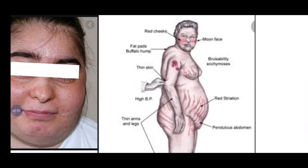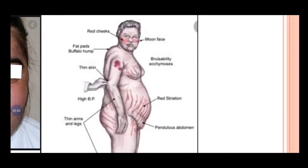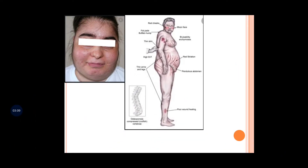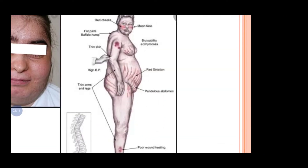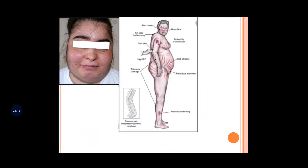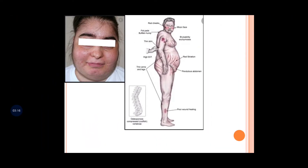There is the buffalo hump — fat deposition in the neck and on the shoulders with fat pads present. There is moon face, red striations, and thin arms and neck due to protein catabolism. The muscles are wasted, there is poor wound healing, and there is osteoporosis. All these are features of Cushing syndrome.